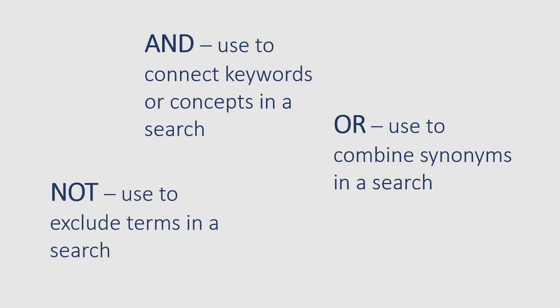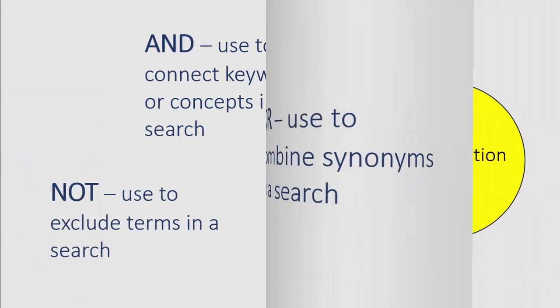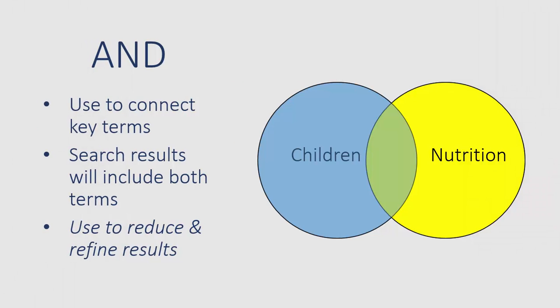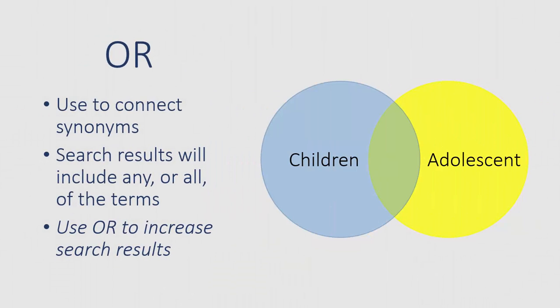Let's take a closer look at AND. I have found it's helpful to think of Boolean operators in relation to Venn diagrams. When connecting keywords in a search — for example, children and nutrition — using AND will retrieve items which have both children AND nutrition. The retrieved items are part of the overlapping green space in our Venn diagram. Using AND will help reduce and refine your search results.